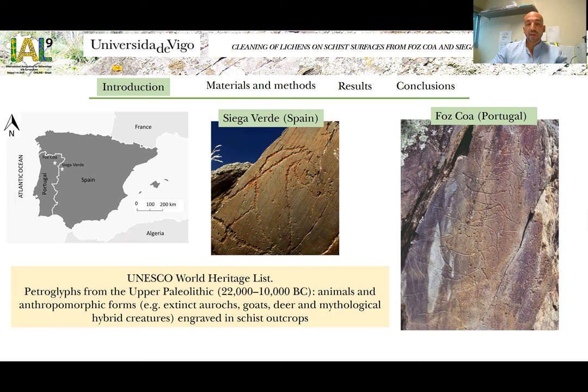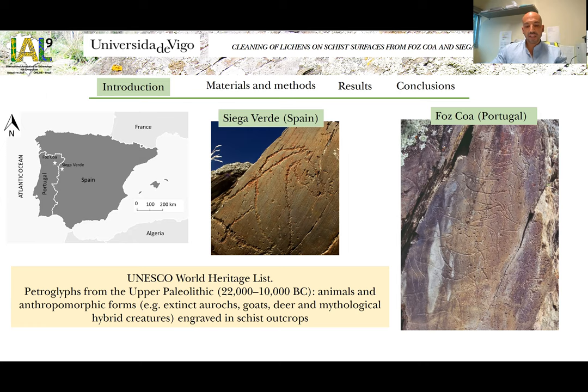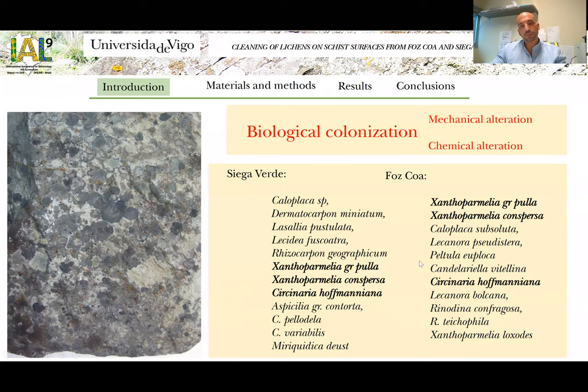Starting with the introduction, I want to introduce our case study. The Spanish Archaeological Site, Ciegaverde, and the Portuguese Archaeological Site, Foscoa, have petroglyphs from the Upper Palaeolithic. For this reason, both are included in the UNESCO World Heritage List. Petroglyphs from these sites have animal and anthropomorphic forms, such as extinct auroch, goats, deer, and mythological irith creatures. These forms are engraved mainly in schist outcrops, as we can observe in these images.